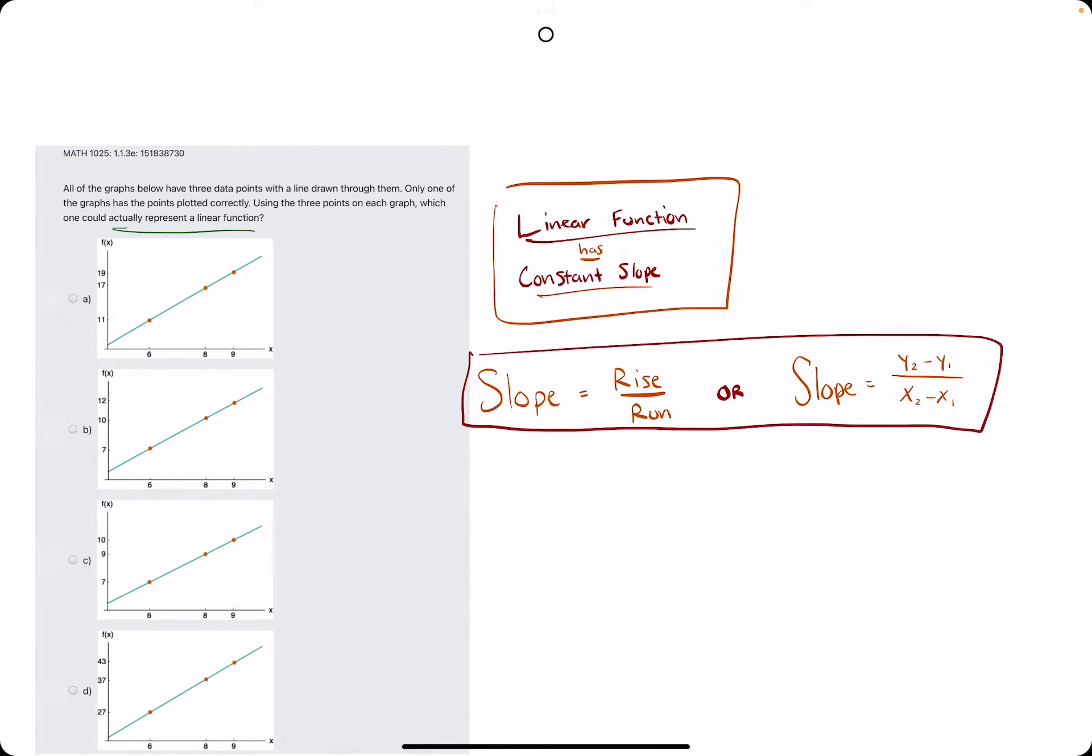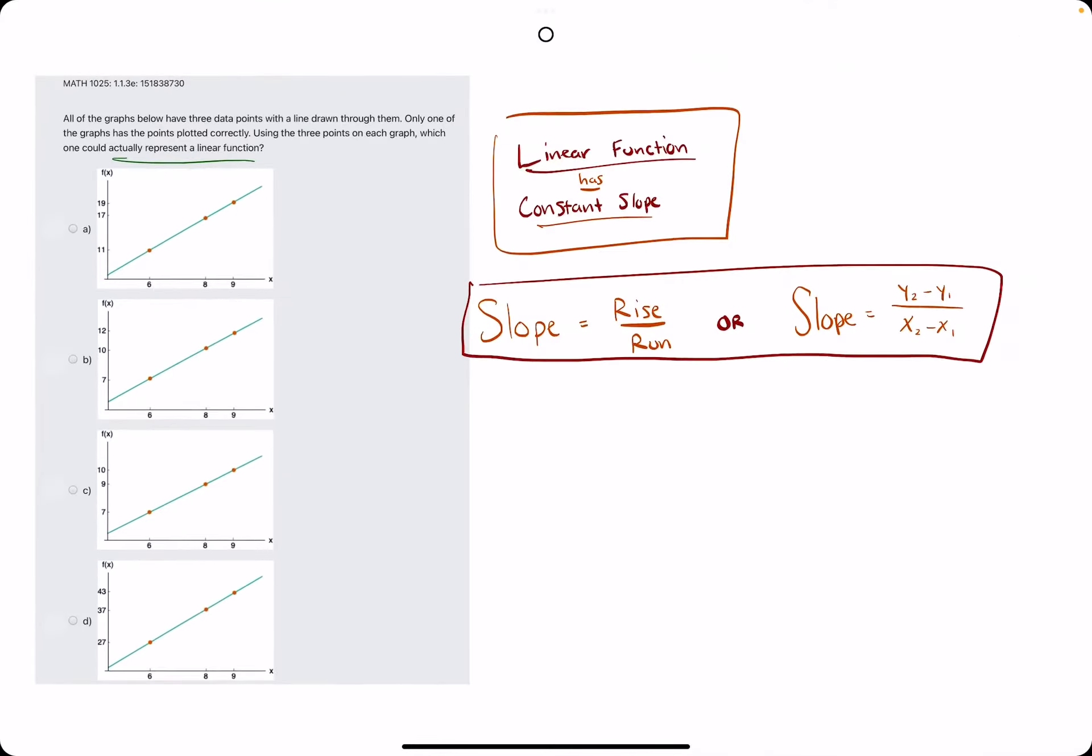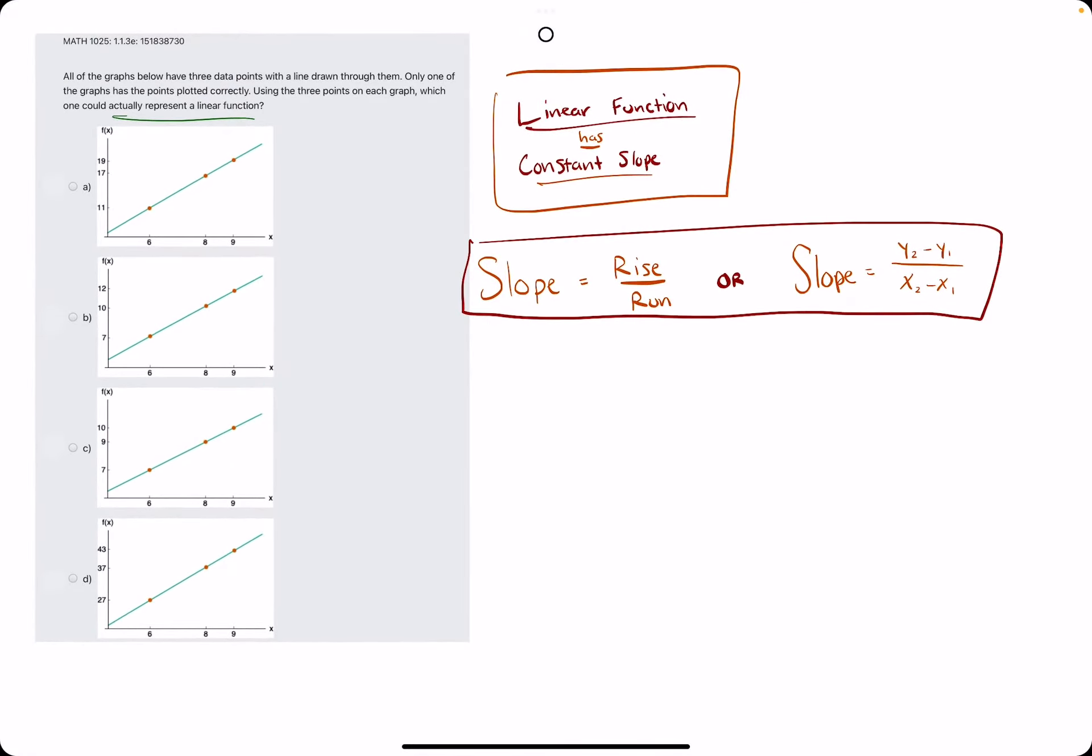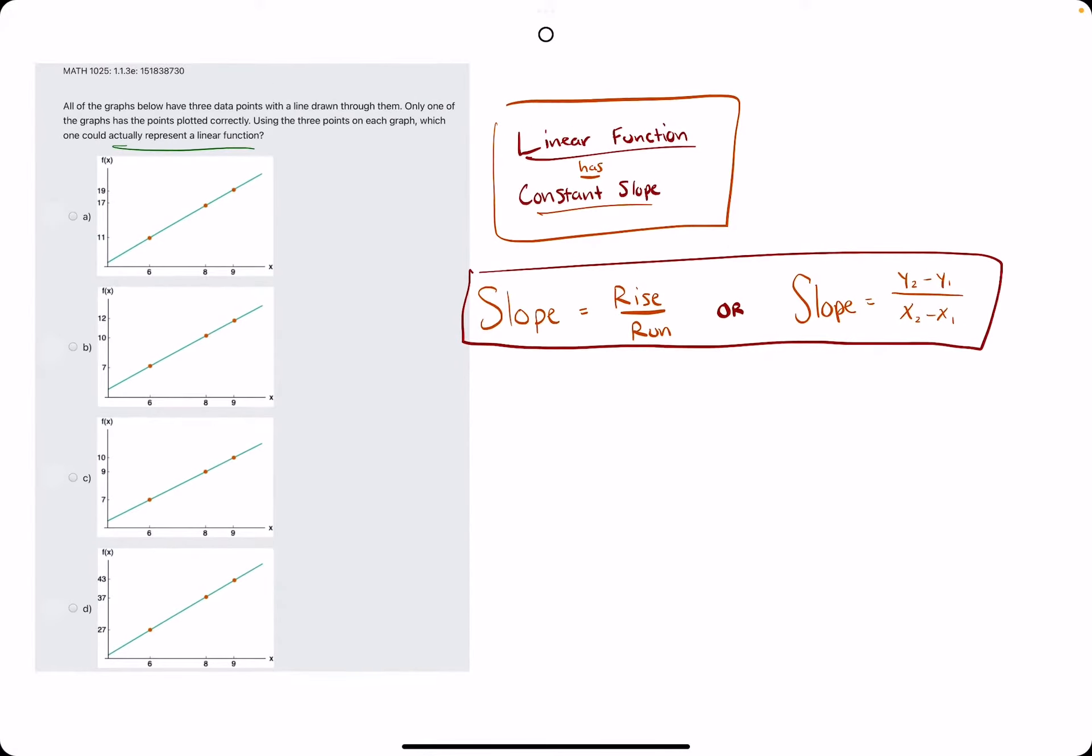So if you notice, on the axes we have different numbers going on in these different graphs. So what we're checking for is which one of these is actually a linear function, which means that we're looking for the one that has a constant slope the entire time.